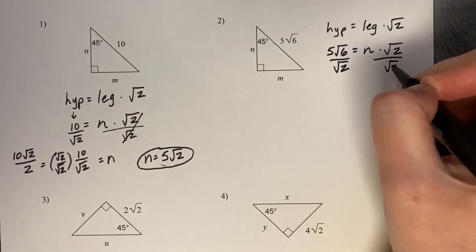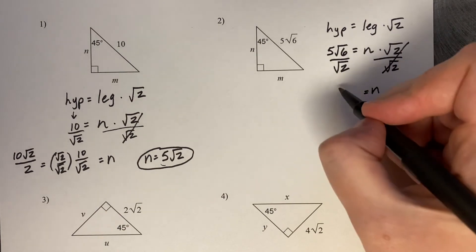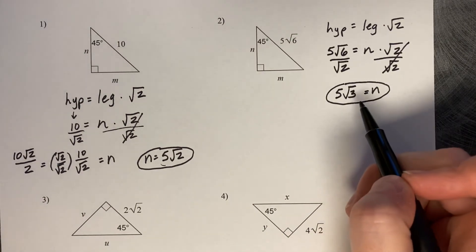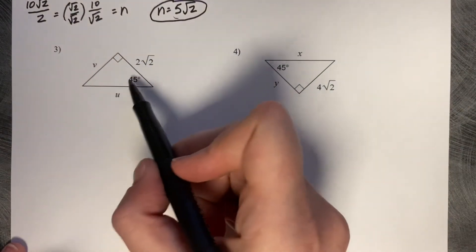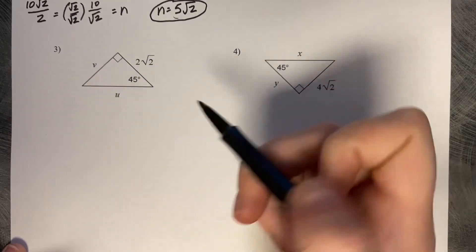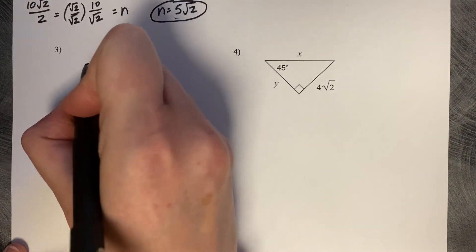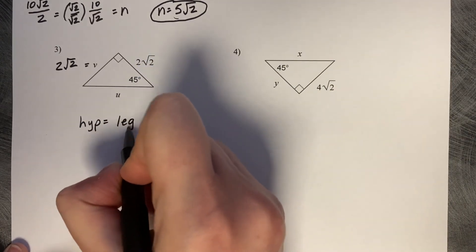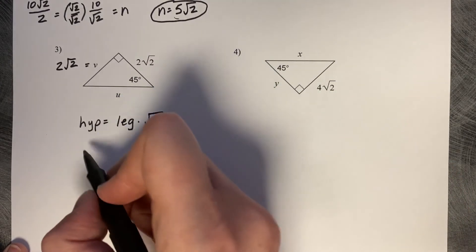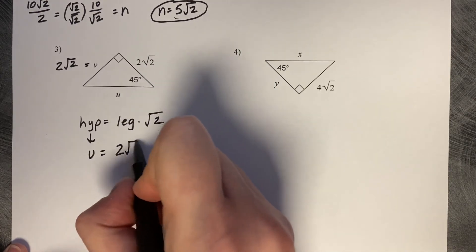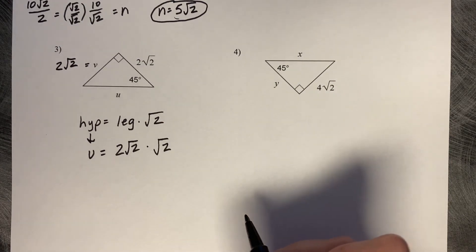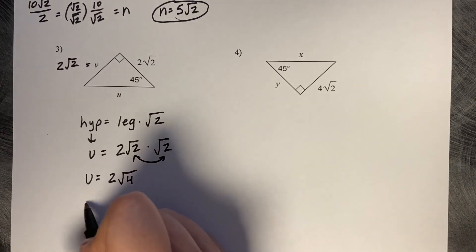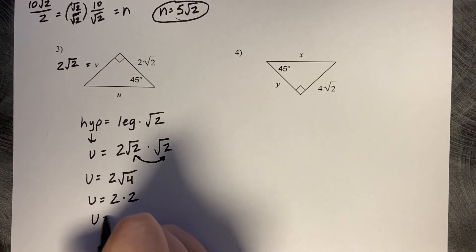Dividing both sides by the square root of two: six divided by two is three, so n equals five square root of three. We didn't need to rationalize here since the division simplified cleanly. For the next example, the given leg is square root of two, so the other leg is also two square root of two (isosceles). The hypotenuse u equals the leg times root two: u equals two root two times root two. The square roots combine to give the square root of four, which is two, so u equals two times two, which is four.